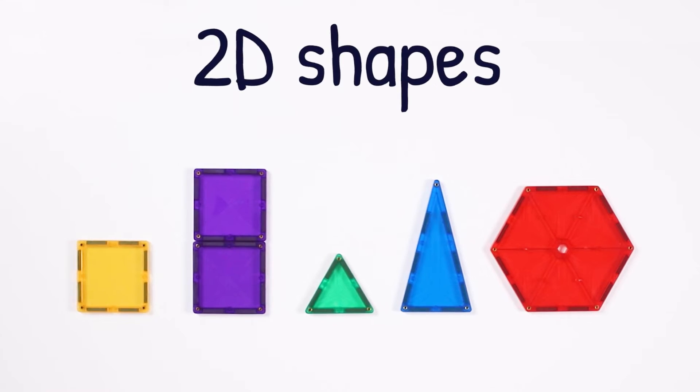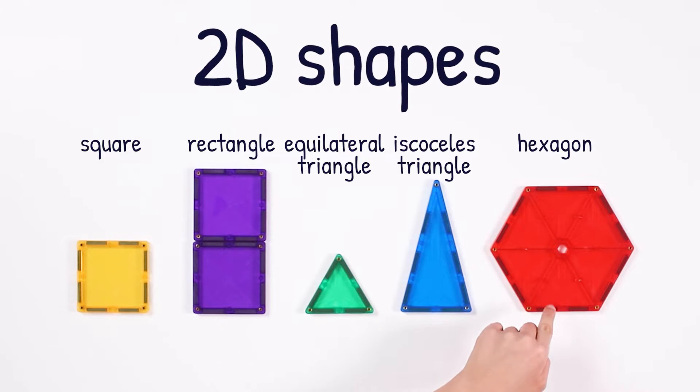These are some of the 2D shapes that you'll see in this video: square, rectangle, equilateral triangle, isosceles triangle, and hexagon.